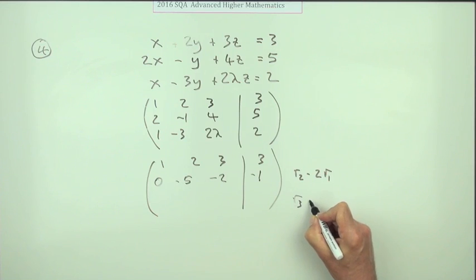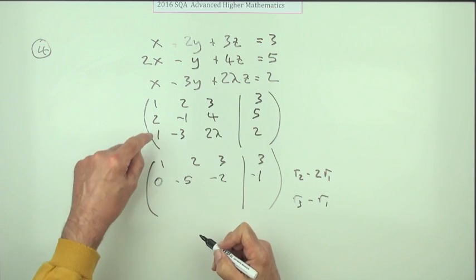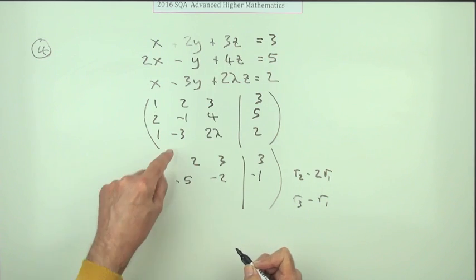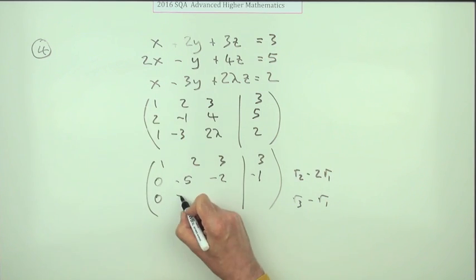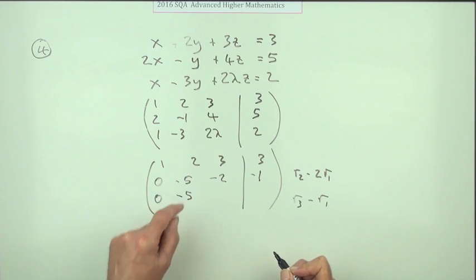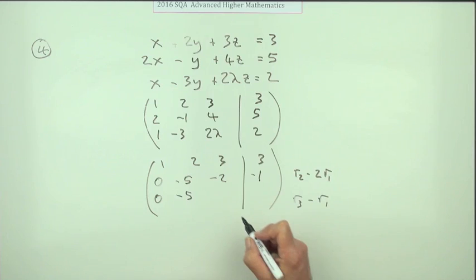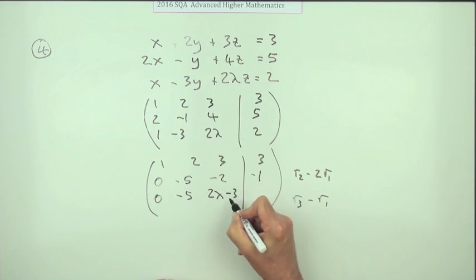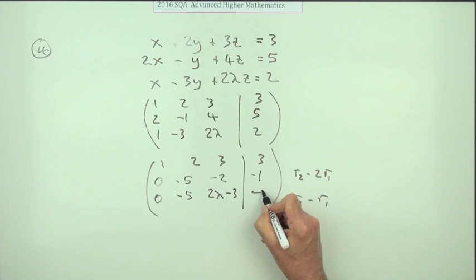This one's easier. Row 3 minus row 1. 1 take away 1, 0. Negative 3 take away 2, negative 5. 2 lambda minus 3, 2 lambda minus 3. 2 take away 3, negative 1.